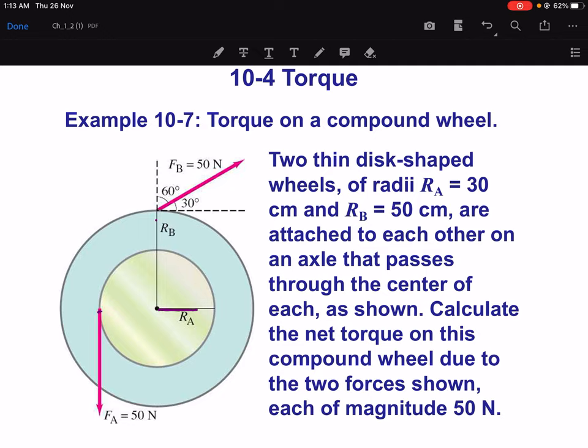So F_A and F_B is 50 Newton. If you look at F_A here, 50 Newton going down, the R_A circle will go this way, counter-clockwise. But for F_B, which is also 50 Newton, because of this direction, the circle of B, the wheels of B, will go this way.